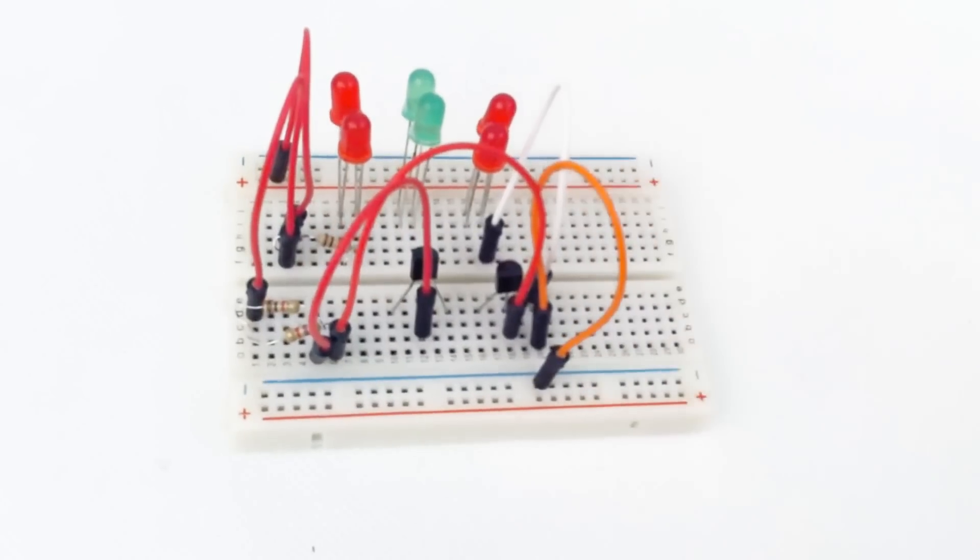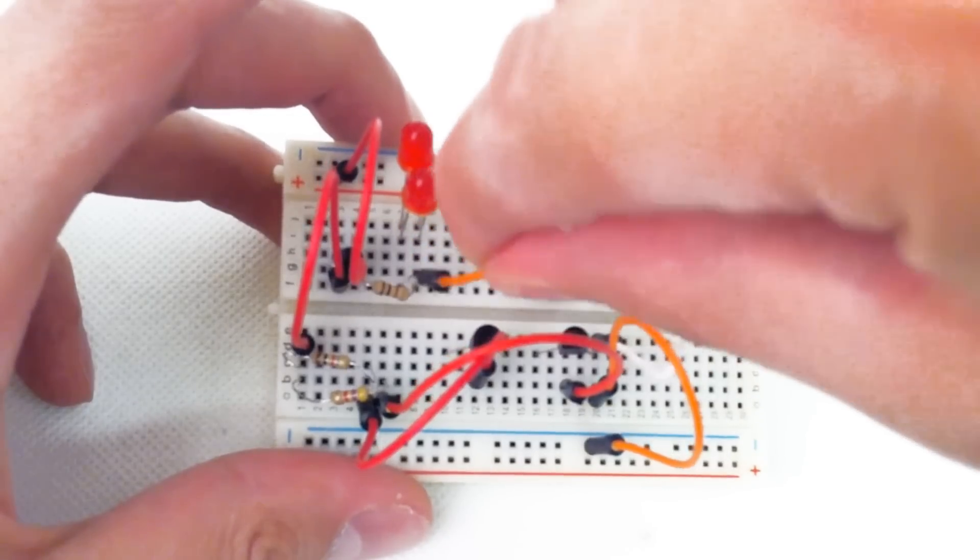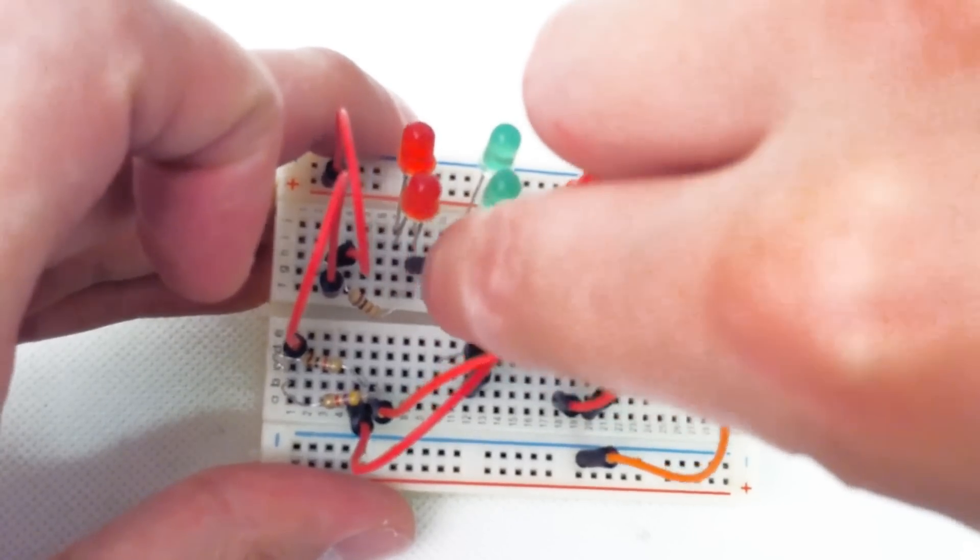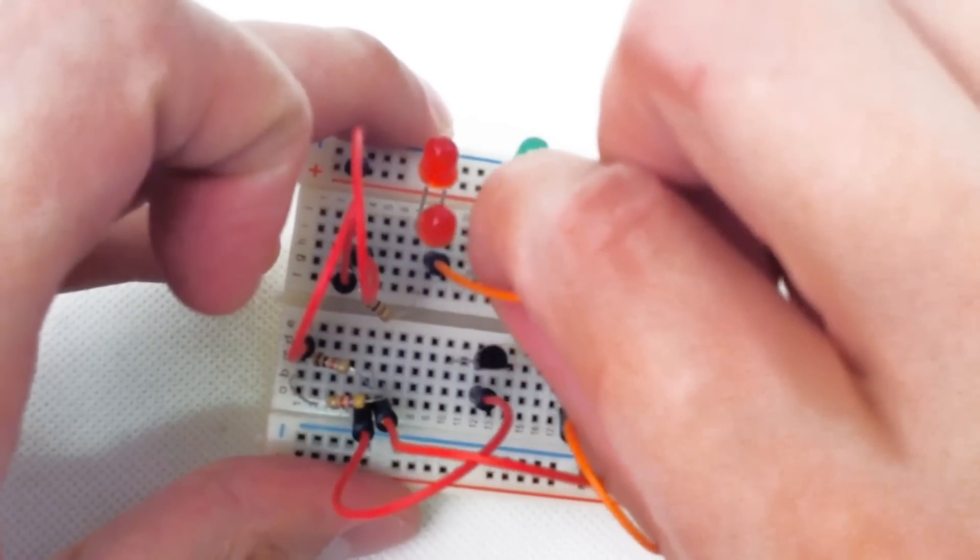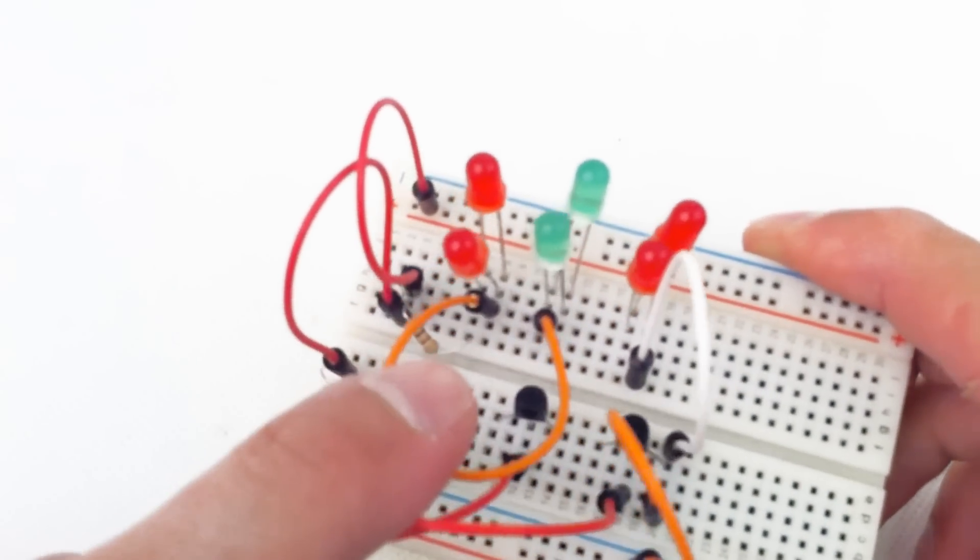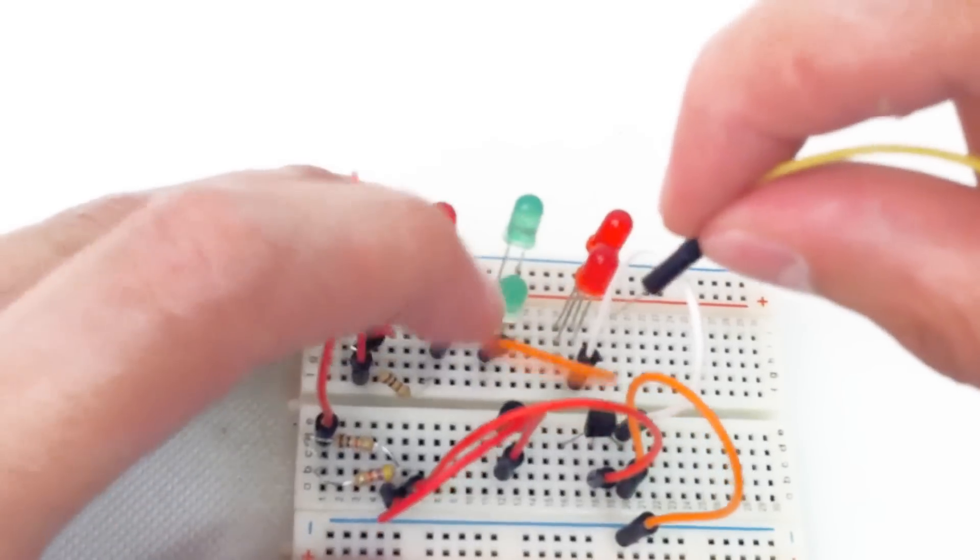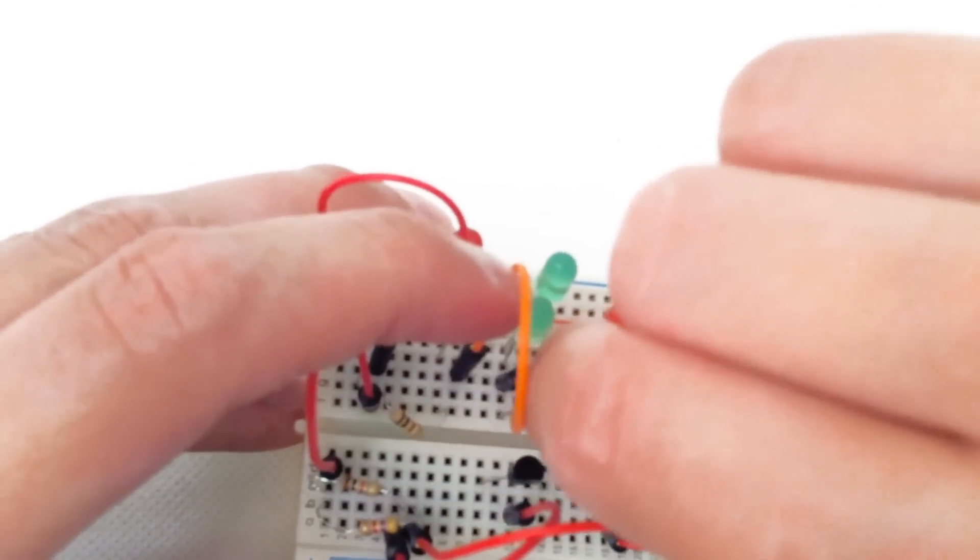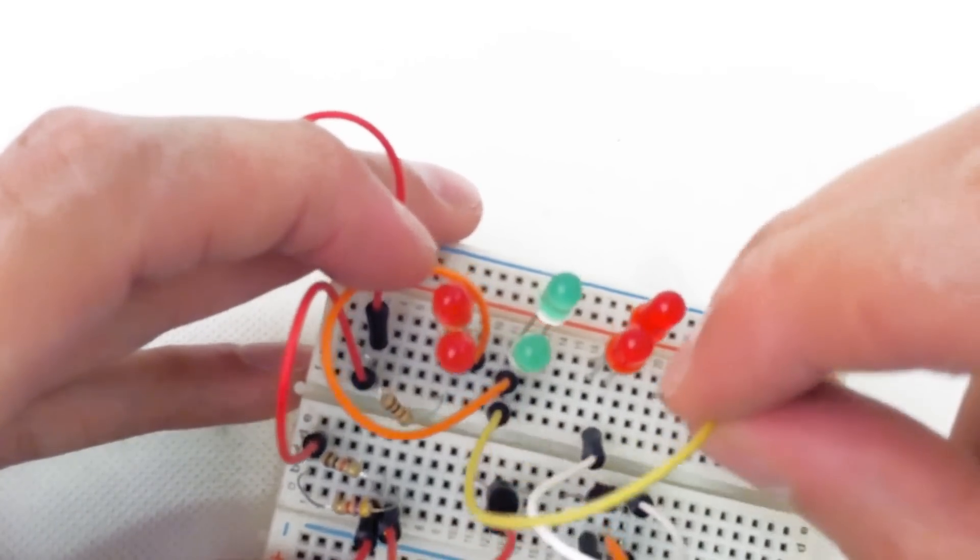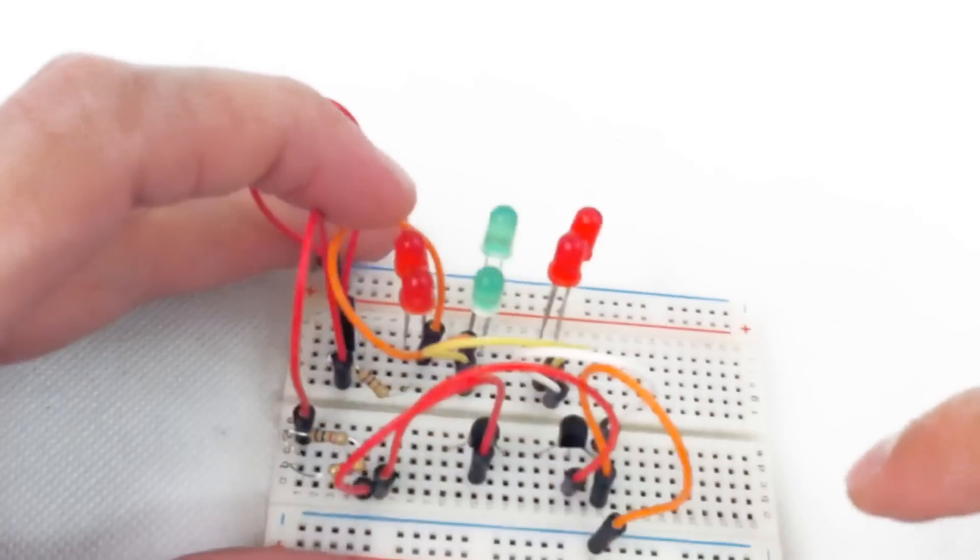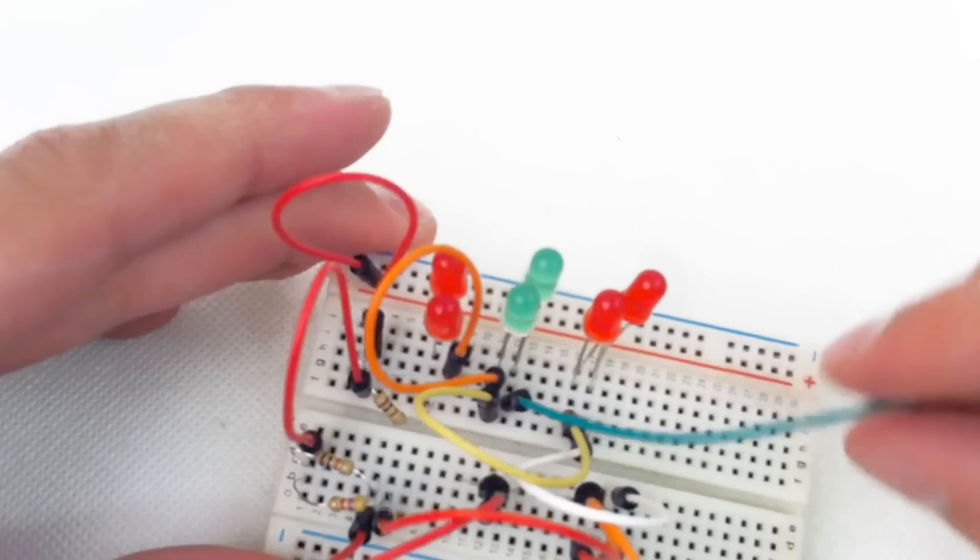Now we'll hook up our LEDs, connecting them in series. The 100 ohm resistor goes to the positive terminal. We connect negative to positive of the next LED, continuing through all the LEDs - negative of one to positive of the other. Positive of the green, positive to positive, positive of this red. Negative to negative, negative of the green, negative of the red.